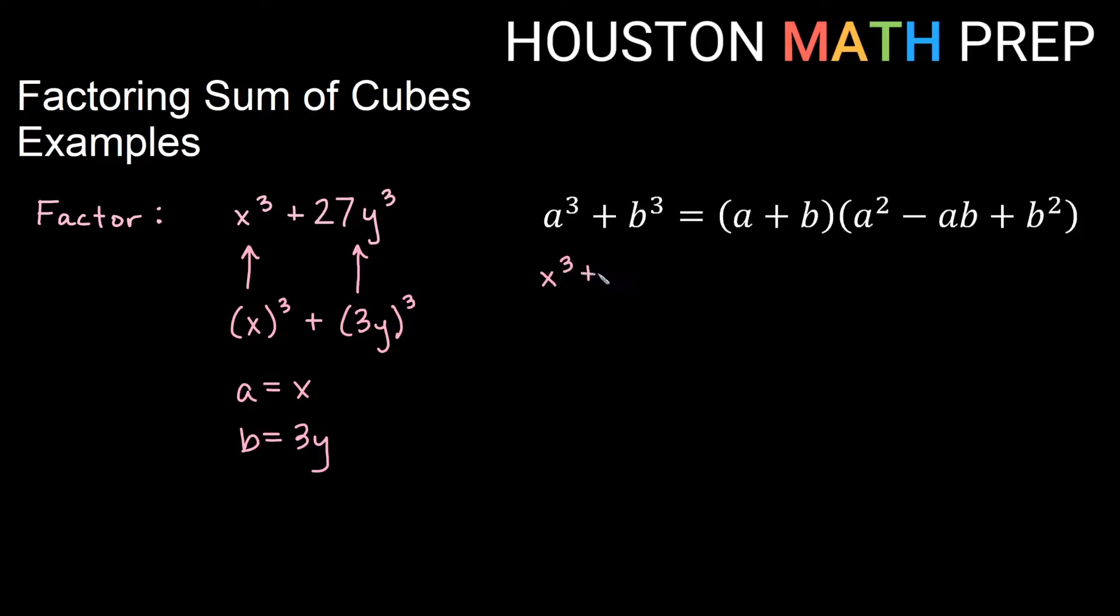x³ + 27y³ is going to equal short factor with a and b, so x and 3y. Square of the front goes in front, so if I square x, I get x². Square of the back goes in back, so if I square 3y, I get 9y². Multiplying in the middle, x times 3y, if I write it alphabetically, would give me 3xy.